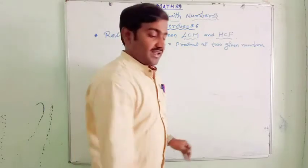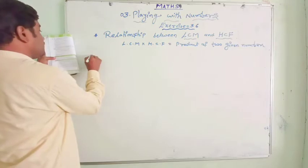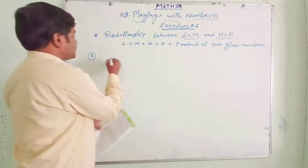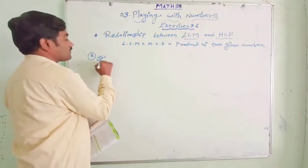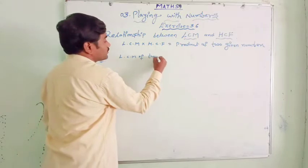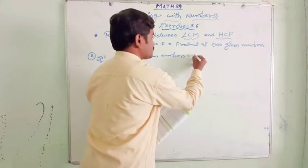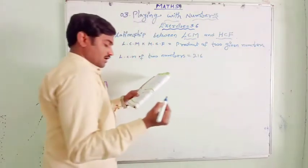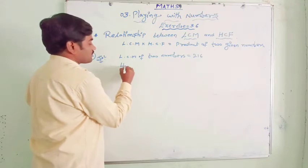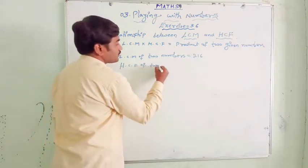There are three more important questions in this exercise. The second question: if the LCM of two numbers is 216, and the product of two numbers is given...